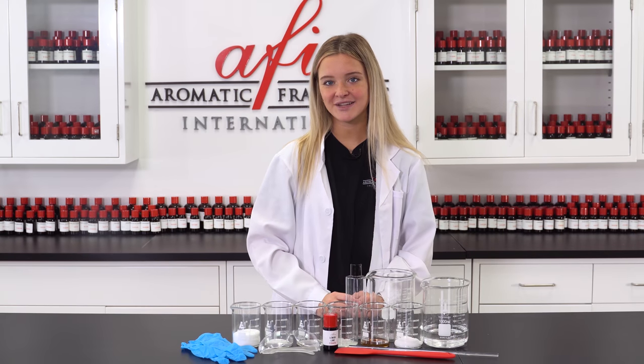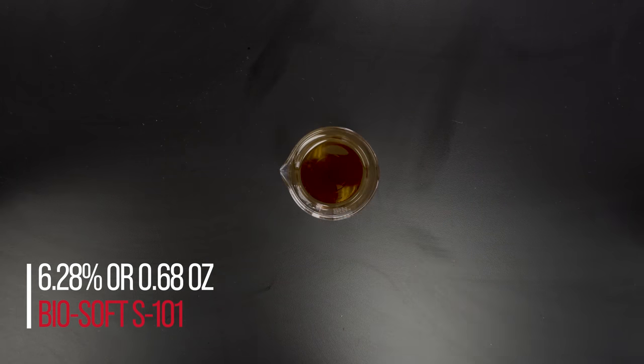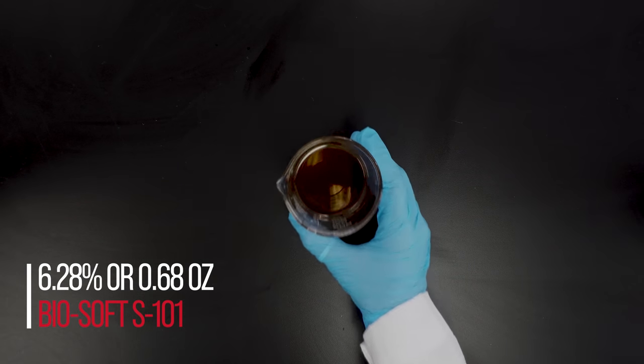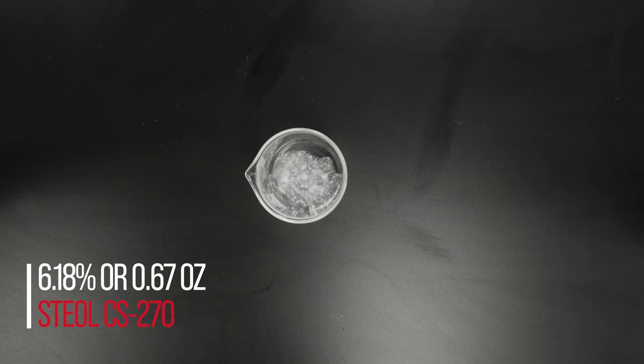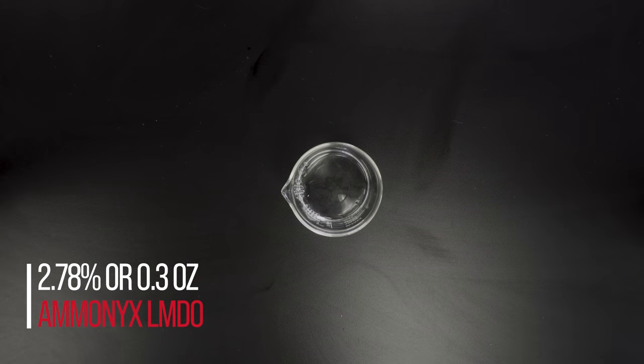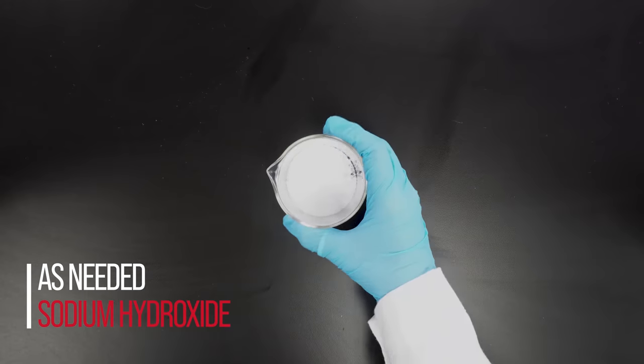To make 10 ounces of product you'll need 83.08% or 9 ounces of water, 6.28% or 0.68 ounces of Biosoft S101, 6.18% or 0.67 ounces of Stiol CS270, 2.78% or 0.3 ounces of Monix LMDO, citric acid as needed, and sodium hydroxide as needed.